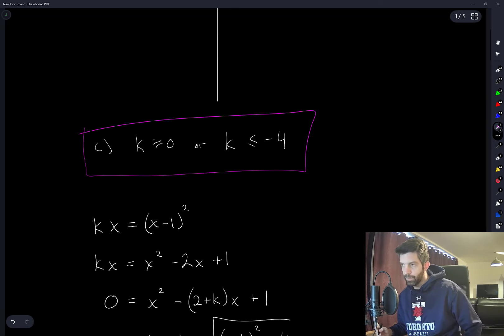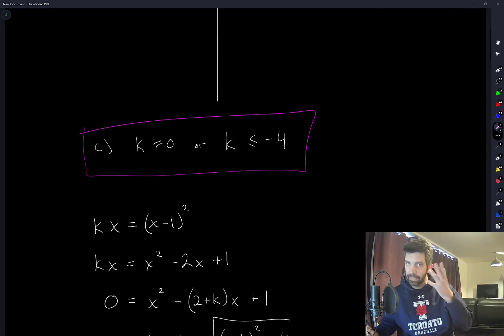So a couple different ways to see this one. The first thing that came to mind was to just plot these. Even the wording of the question, the phrasing, is talking about intersections between a line and a parabola. So the first thing that came to mind just from the language was plotting it and looking for possibilities to intersect.